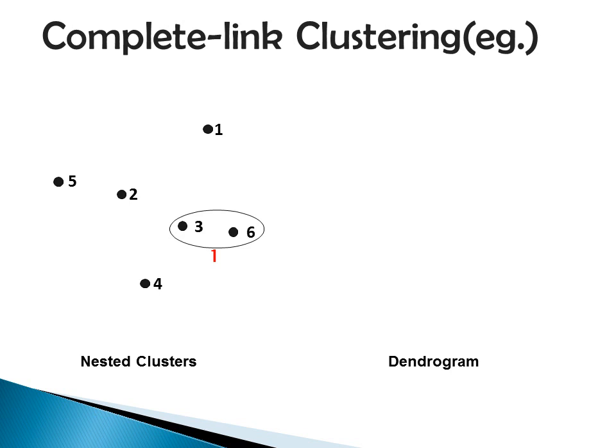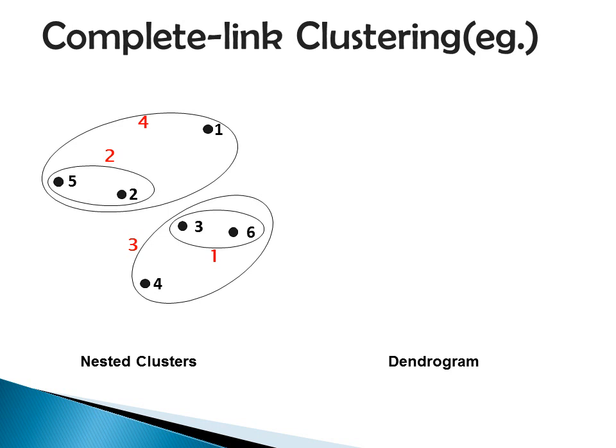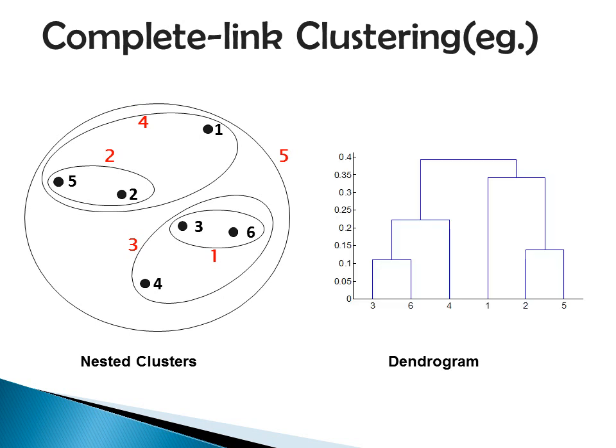This is a simple example of complete link strategy. Initially we merge data points 3 and 6 to form cluster 1, then data points 2 and 5 are merged to form cluster 2, then data point 4 and cluster 1 are merged to form cluster 3, then cluster 2 and data point 1 are merged to form cluster 4, and finally cluster 4 and cluster 3 are merged to form cluster 5. The dendrogram is depicted at the right portion. In complete link strategy, we use the maximum distance between pairs.